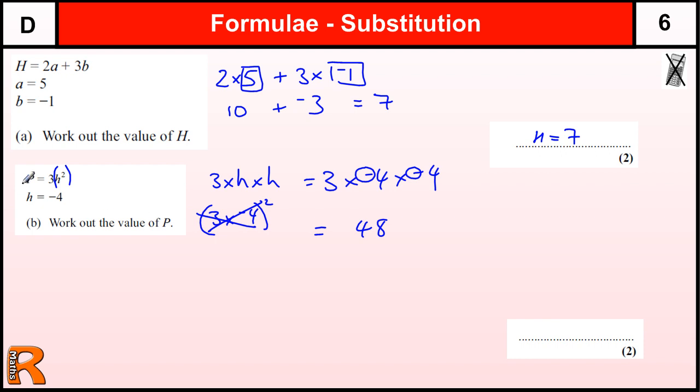So work out the value of P. Well, P equals that, 3h squared. That's what P equals. P equals 48.